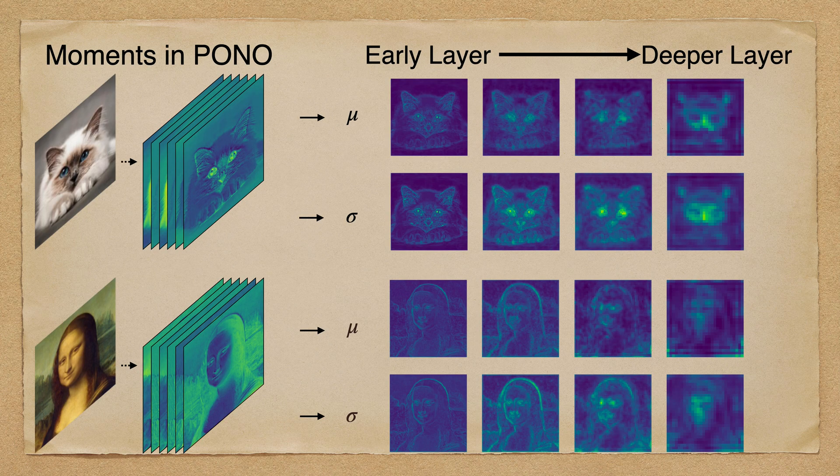Here we show how these extracted moments look like. We could notice that the extracted moments of cats and Mona Lisa successfully capture the general structure information of the features.